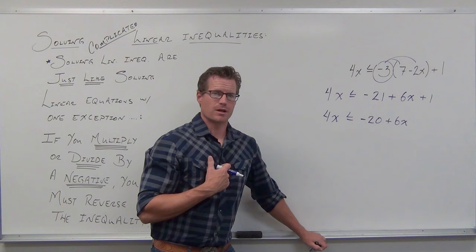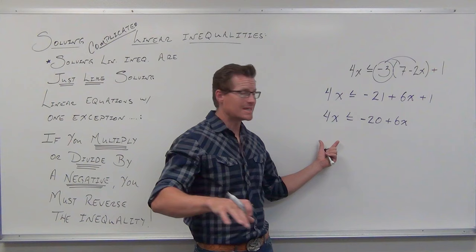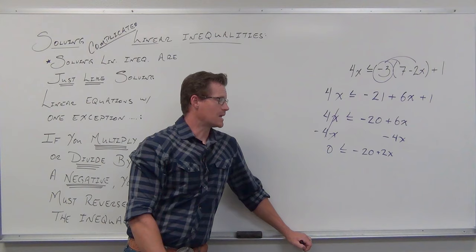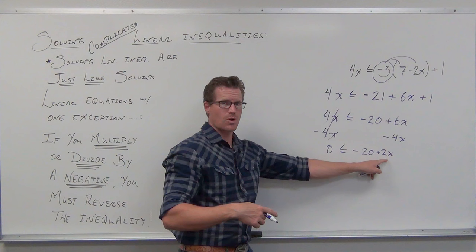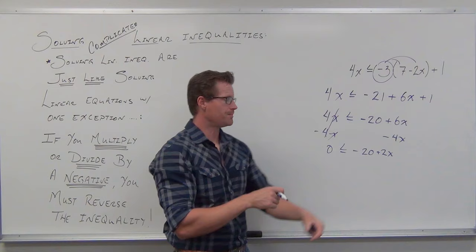I'm going to give you the other option this time. I could subtract 4x and get 0, which is totally fine: 0 is less than or equal to negative 20 plus 2x. Add 20 to both sides — remember, your variable side drives the problem, so get rid of your constant first. Add 20 and divide by 2. You'd get 10 is less than or equal to x. I would want you to reverse that and get x is greater than or equal to 10.